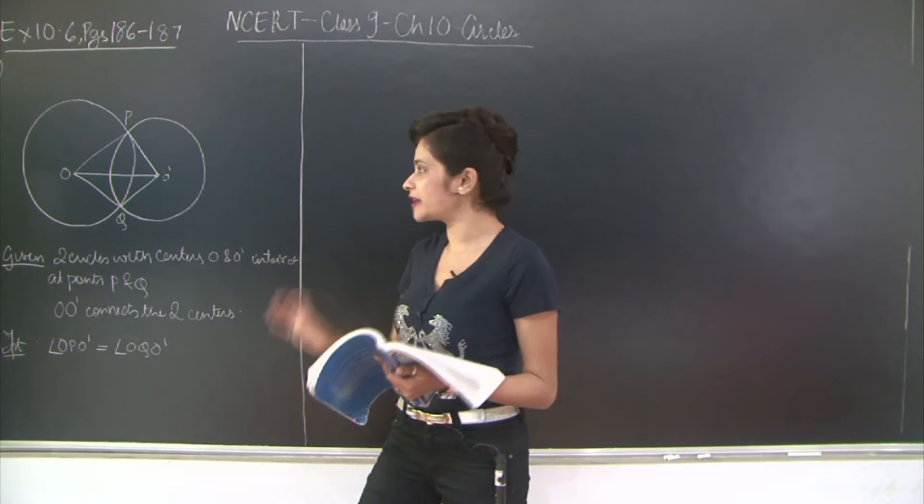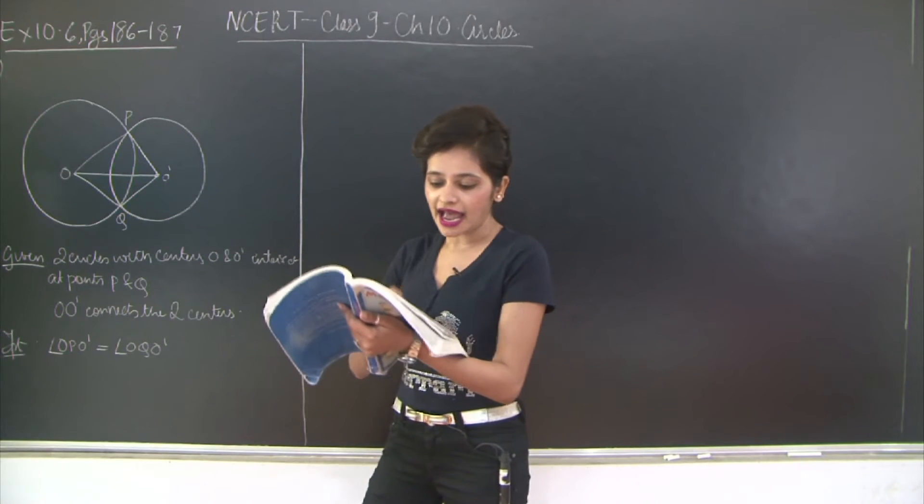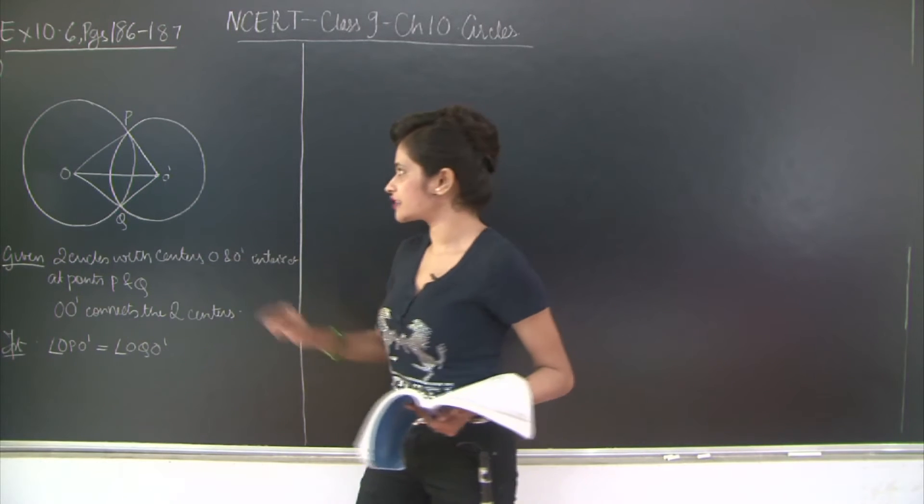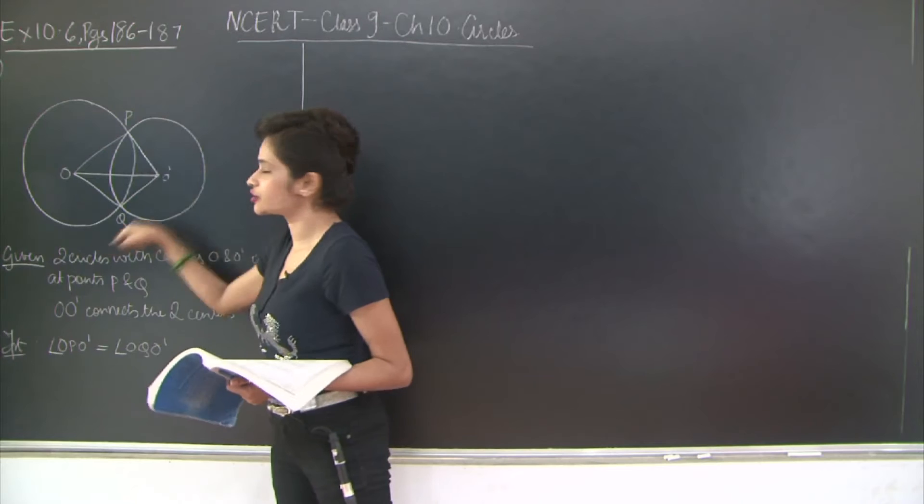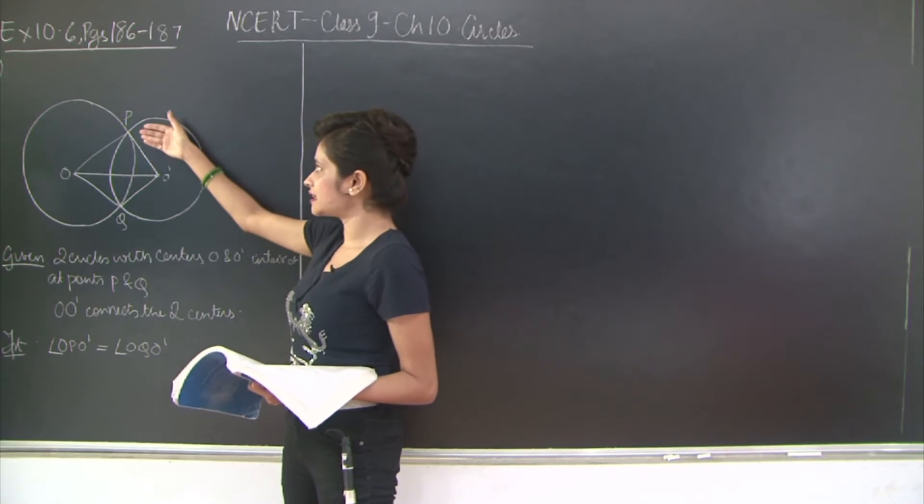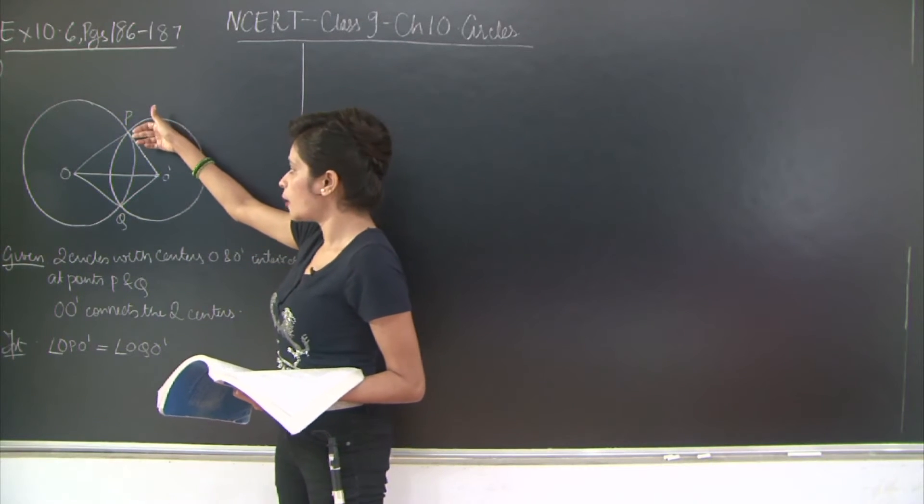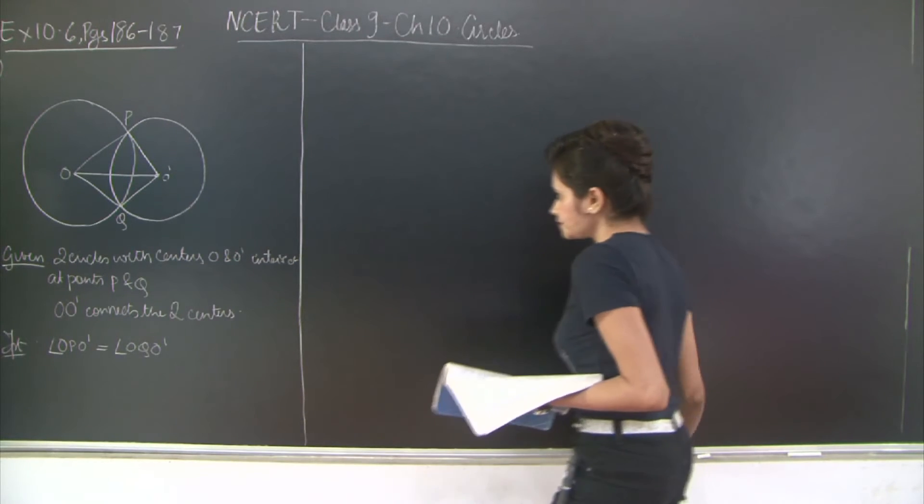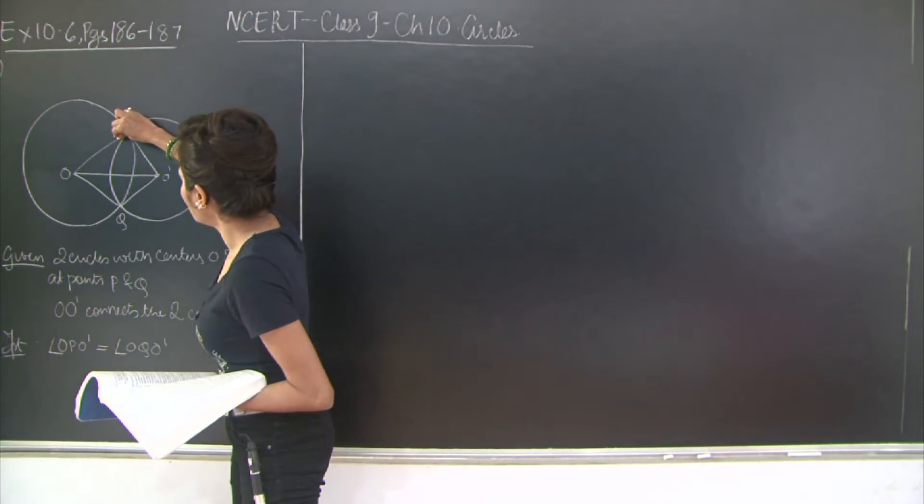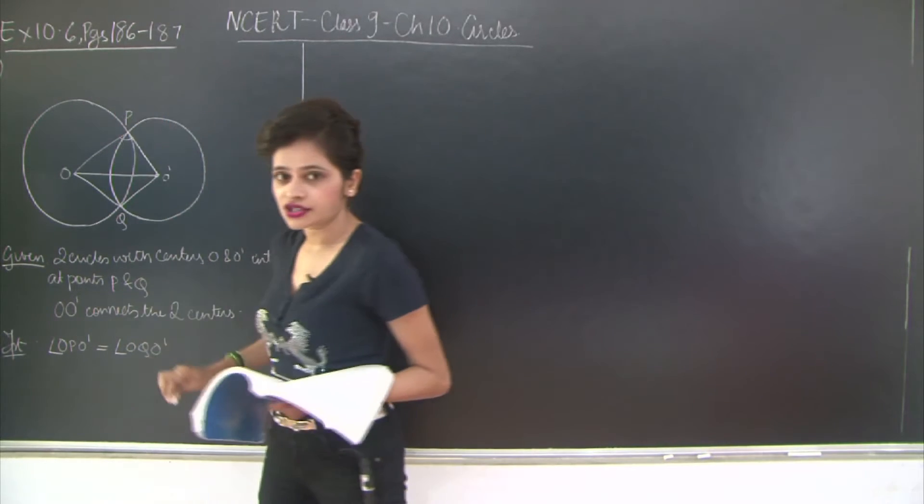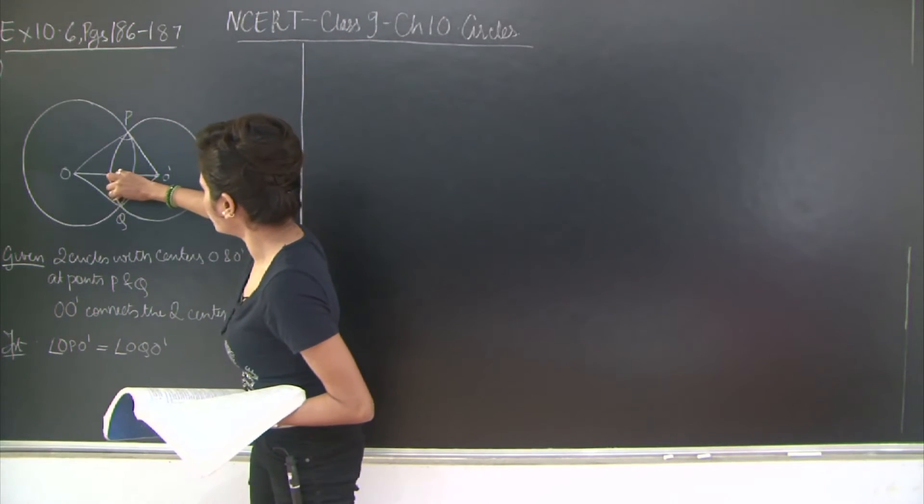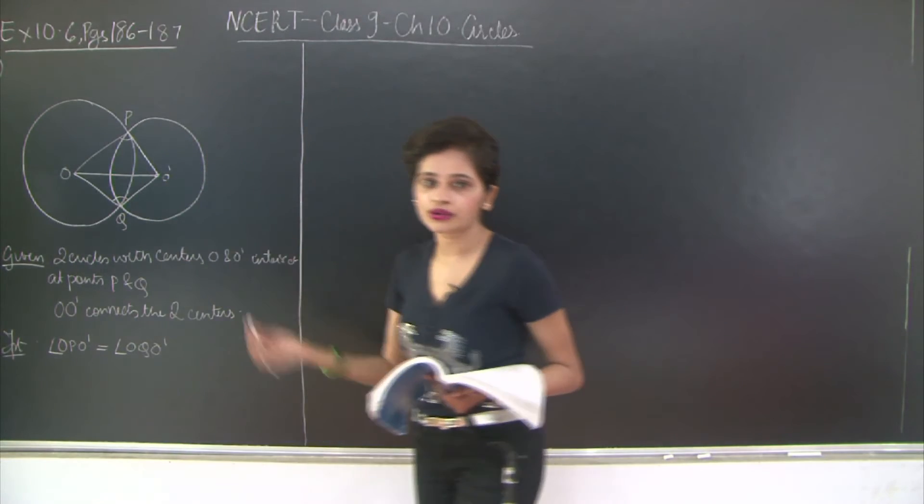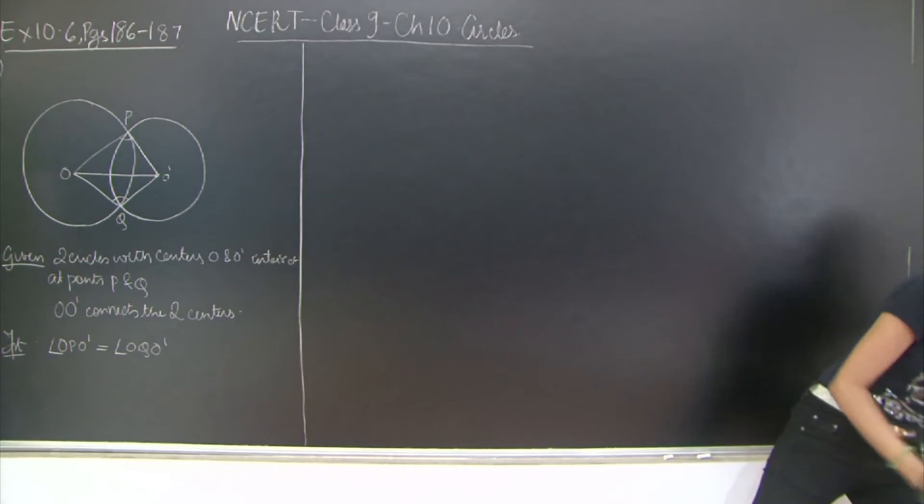So this line subtends equal angles at the two points of intersection. So obviously the two points of intersection of these two circles as you can see in the diagram is points P and Q. Therefore you need to prove that this angle O, P, O' is equal to angle O, Q, O'. So let's go through the given to prove that once again.